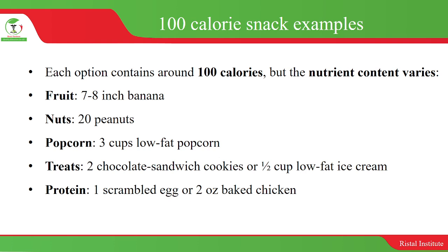So we have not looked at the proteins, the fats, the micronutrients, vitamins. A fruit, for example a banana of 7 to 8 inches, contains 100 calories. 20 peanuts — when you count 1 nut and total up to 20 — will also contribute 100 calories. This is going to help you quantify the amount of food you consume, depending on how much calories you desire to attain in a day.